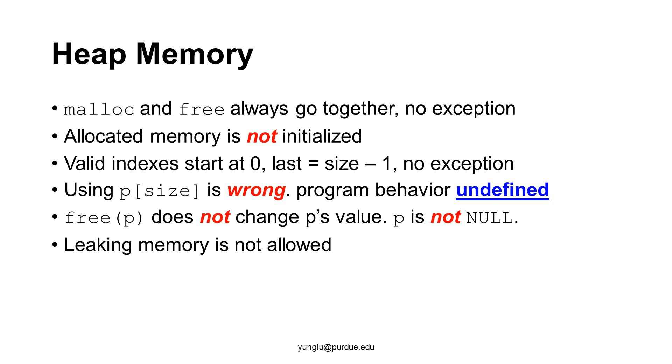Calling free releases the heap memory. However, the value of p is unchanged. You must not assume that p's value becomes null. Allocated heap memory must be released by calling free. Otherwise, the program leaks memory. In ECE 264, memory leak is not allowed.